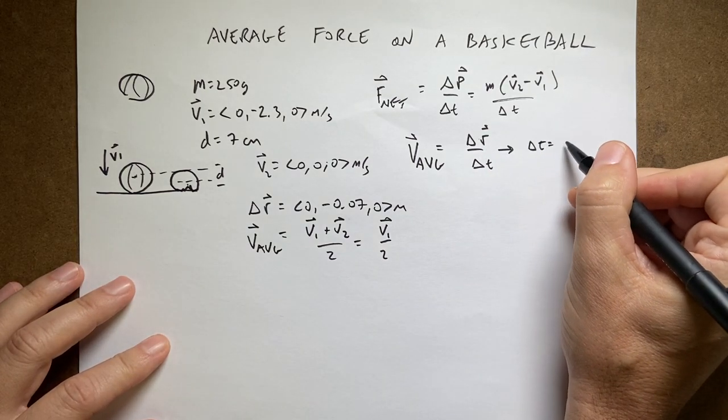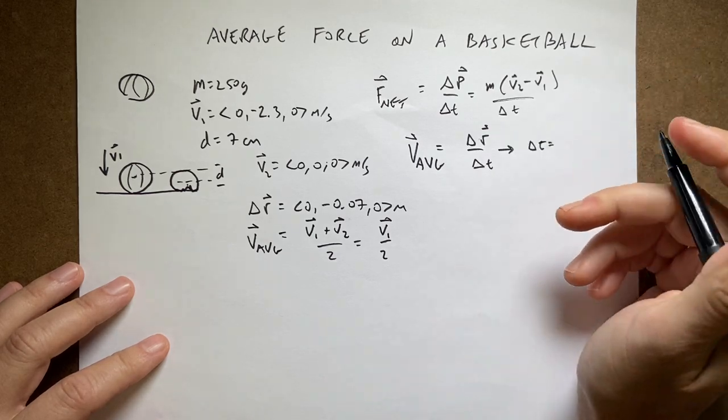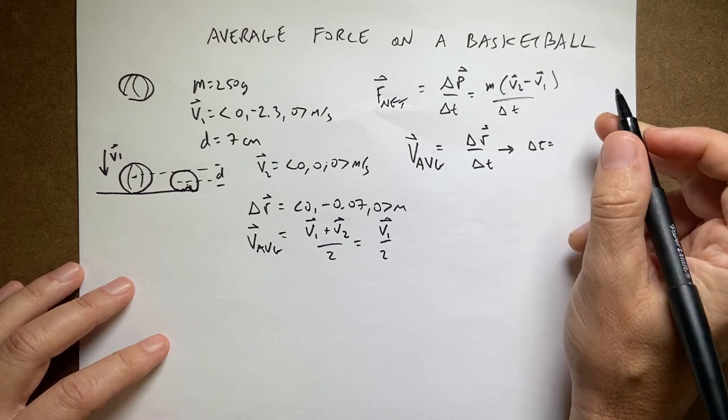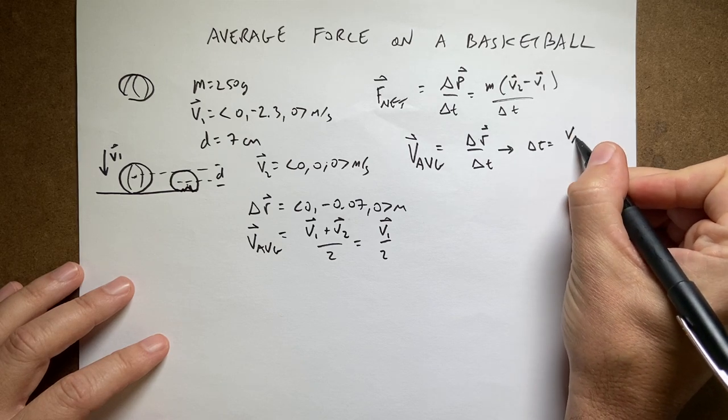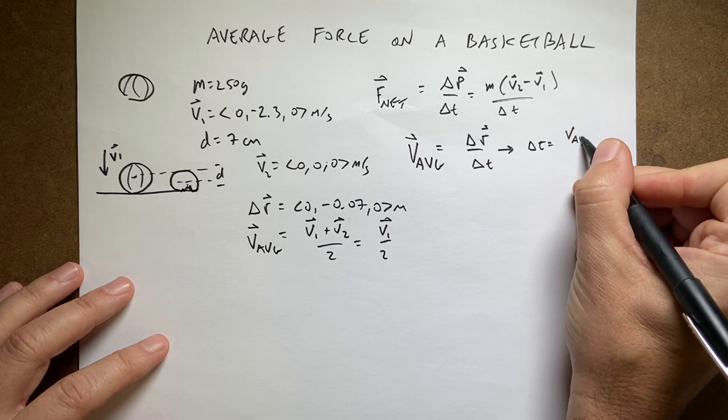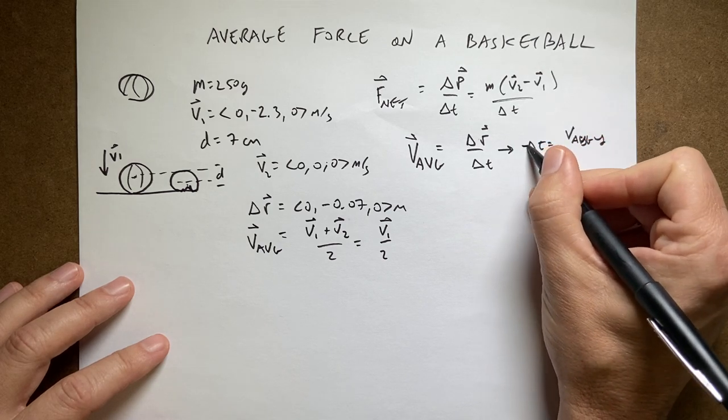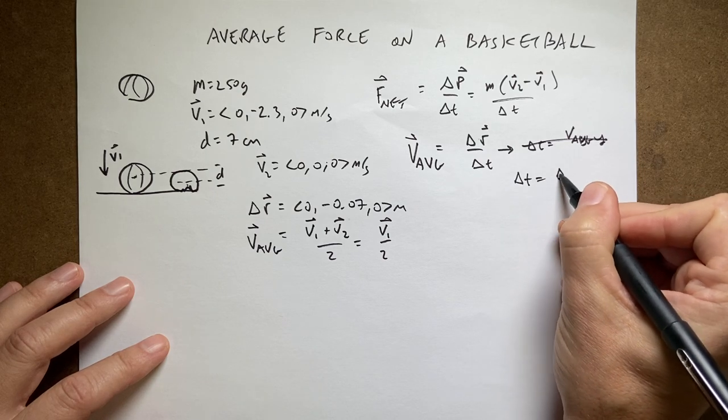So now I know that I can put that in up here and solve for delta t. So delta t is going to be, okay I messed up here, so I'm going to write delta t as v average y.